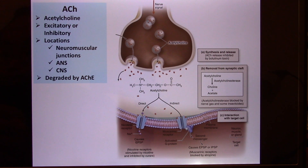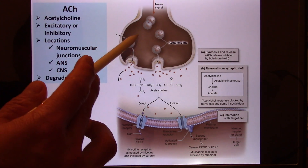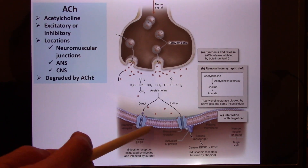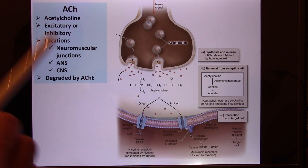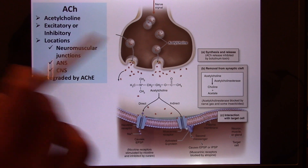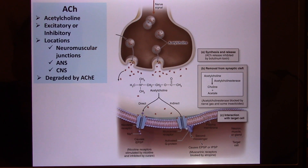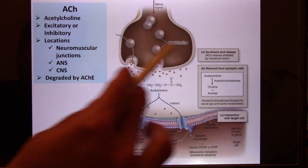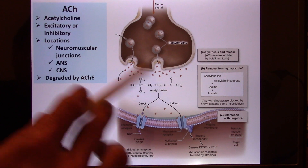The first neurotransmitter is acetylcholine. Acetylcholine is used at the neuromuscular junction — where neurons connect with muscle. The motor neuron uses acetylcholine as its neurotransmitter. The autonomic nervous system and some brain areas also use acetylcholine. The abbreviation is ACh — capital A, capital C, lowercase h. Once acetylcholine is released, it won't stay forever; it will eventually be degraded by enzymes.